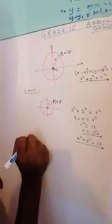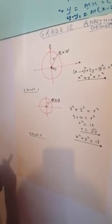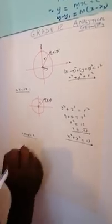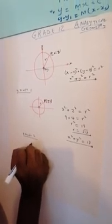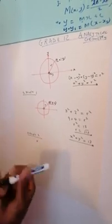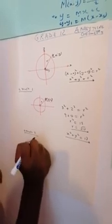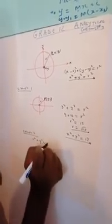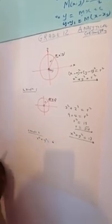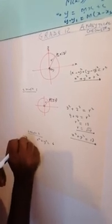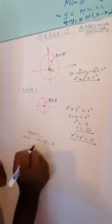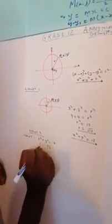We're going to go to Example 2. This one also passes through the origin. The question gives us the equation x squared plus y squared equals 6, and asks what is the radius. The radius will be r equals the square root of 6.